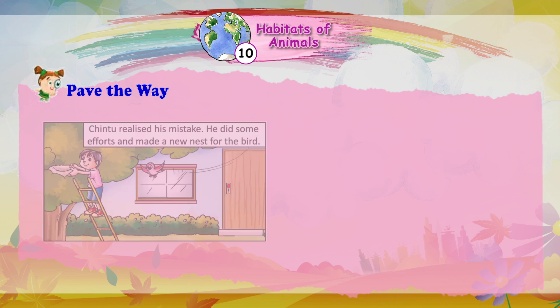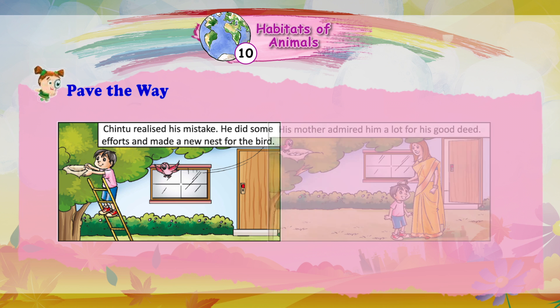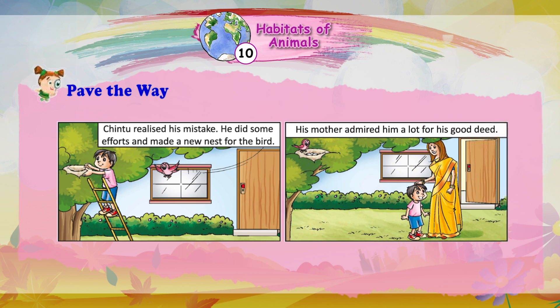Chiltu realized his mistake. He did some efforts and made a new nest for the bird. His mother admired him a lot for his good deed.